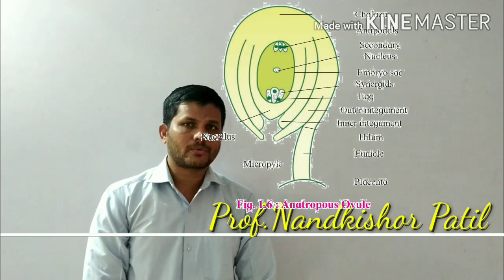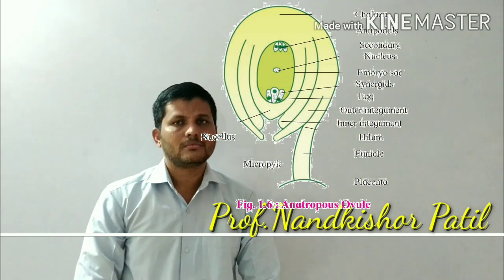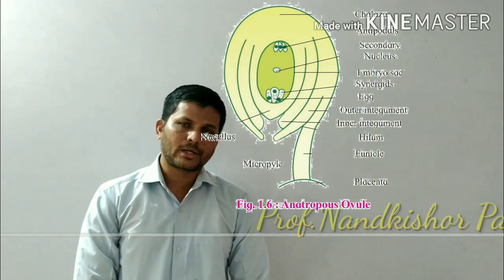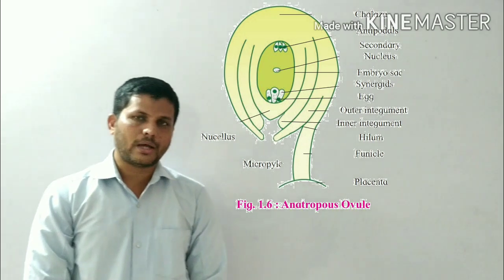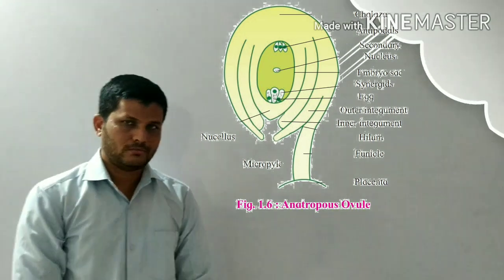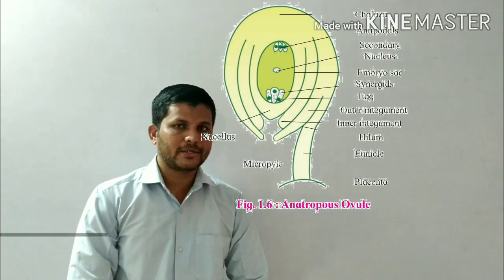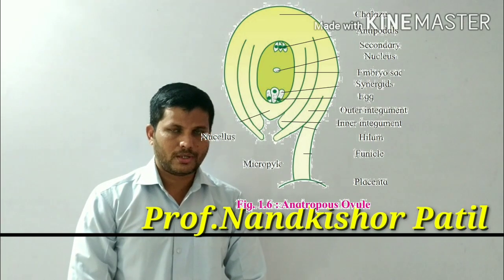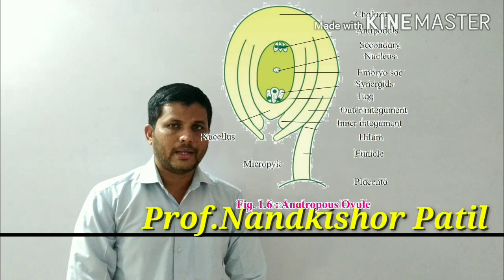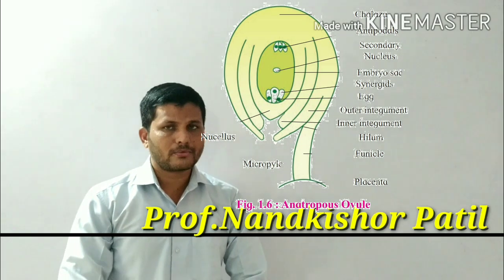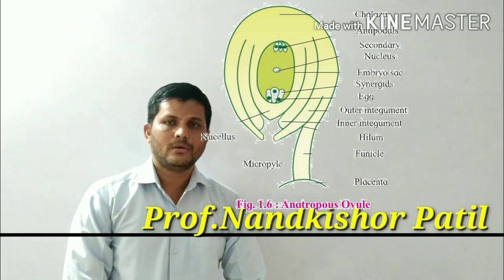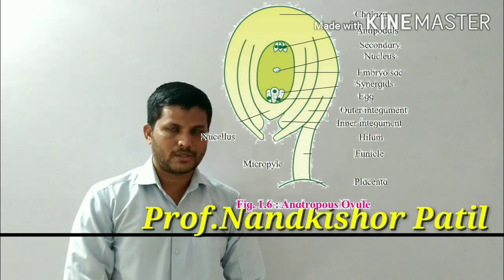So in the angiosperms, the most common type of ovule is the anatropous, where the micropyle is directed downwards. And the micropyle is placed adjacent to the funicle.